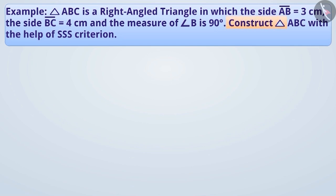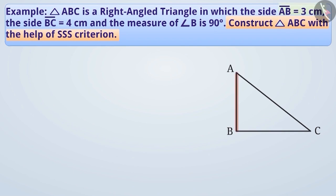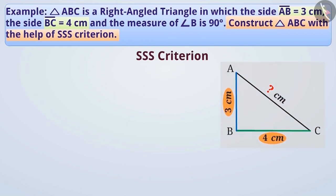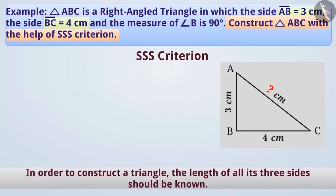Here, we have to construct triangle ABC. In triangle ABC, AB is equal to 3 cm and BC is equal to 4 cm. We don't know the length of the side CA. According to the SSS criterion, we cannot construct a triangle just by knowing the measurement of only two of its sides. In order to construct any triangle, the measurement of all its sides must be known.